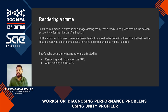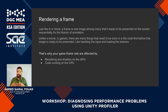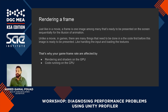Let's talk first about rendering a frame. Just like in a movie, a frame is one image among many that's ready to be presented on screen sequentially for the illusion of animation. Once you see multiple frames in a row, your brain gives you the illusion that objects are moving. Unlike a movie, in games there are many things that need to be done before you can actually present a frame on the screen.